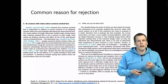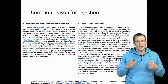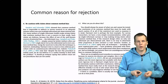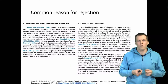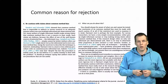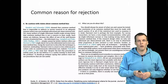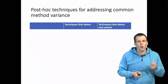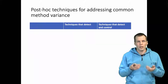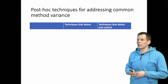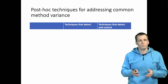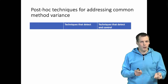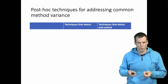How do people address method variance problems? In an ideal scenario you design the study so that method variance is not a problem — for example, measuring innovativeness using a survey and performance using accounting data, making it difficult to argue those are affected by the same measurement method. There are also post-hoc techniques — techniques you can apply after data have been collected — and these can be divided into two categories: techniques that detect method variance problems, and techniques that detect and control for method variance problems.